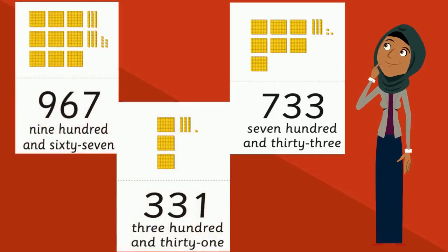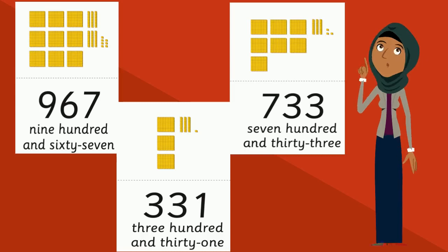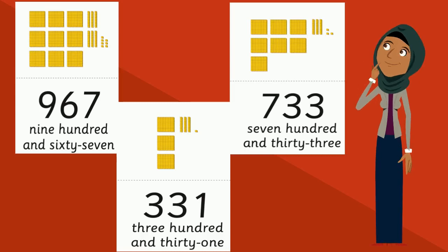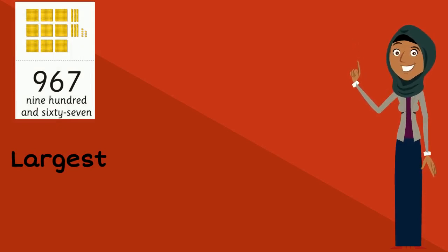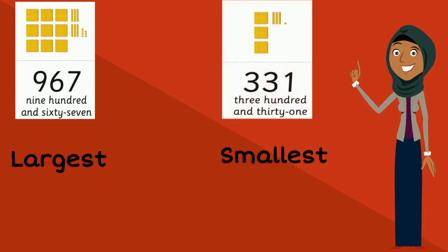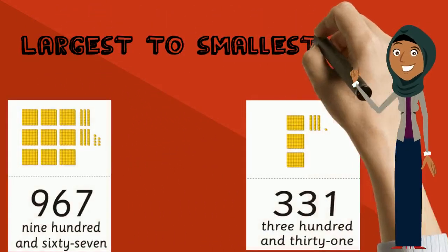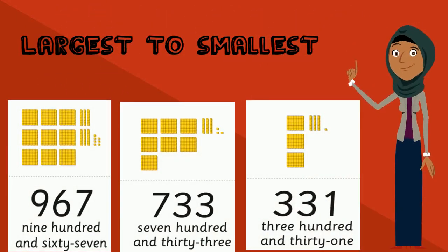Now, if you want to order these three numbers, we first need to compare them to see which one is the largest and which one is the smallest. We look at the hundreds to see which one has the biggest hundreds — number nine is the biggest, so that number could be the largest. Number 331 has the smallest hundreds, so that's the smallest number. This is the arrangement of numbers when you have put them in the largest to smallest order, or in ascending order.